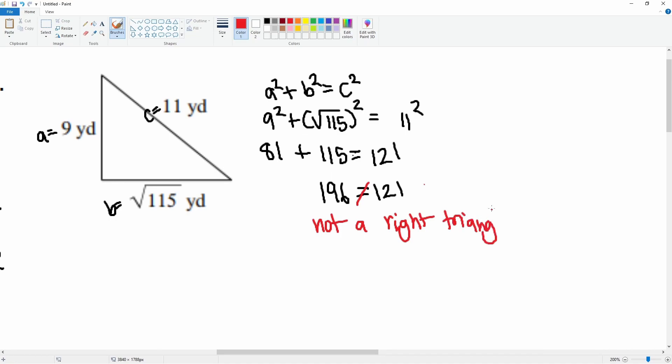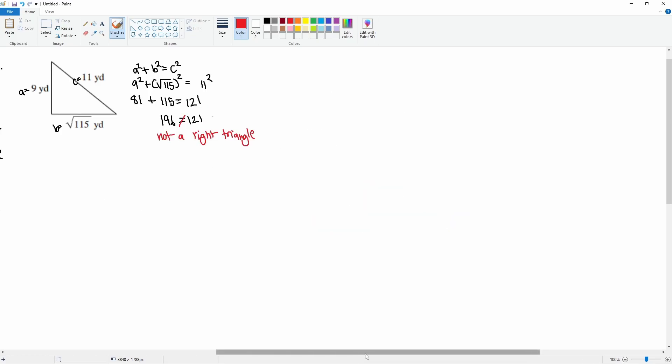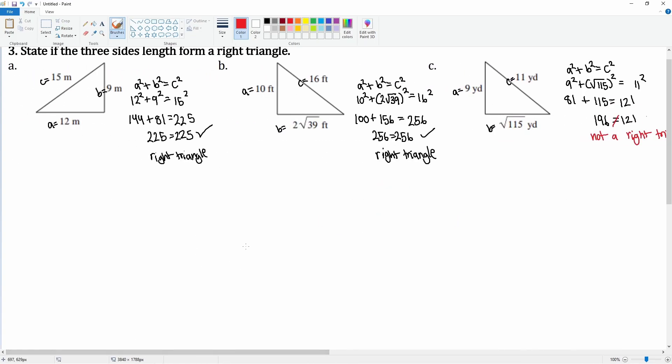So there you go, that is how you determine if any three sides on a triangle make a right triangle or not.